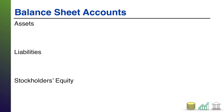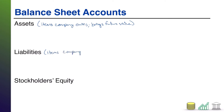A balance sheet, as the name would imply, tells you the balances in all of the company's asset, liability, and equity accounts. Assets in the most simplest form are items the company owns — and it's got to have value to it, so we can think of this as something you own that brings future value. Liabilities are the opposite: those are things that the company owes to others — a future sacrifice of your assets.